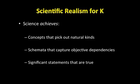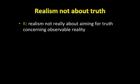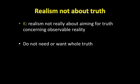Finally, Kitcher says, science also achieves or arrives at significant statements that are true. For Kitcher, realism is not really about aiming for truth concerning observable reality. As he says, a sober realist does not really need or want the whole truth. Because if we did have the whole truth, even only about observables,